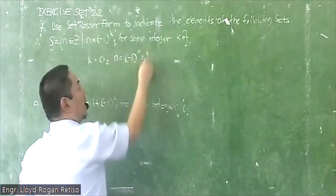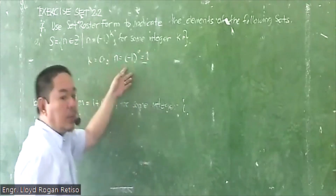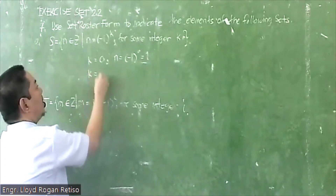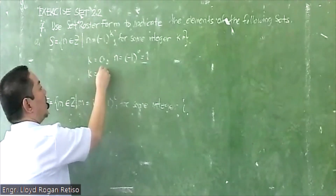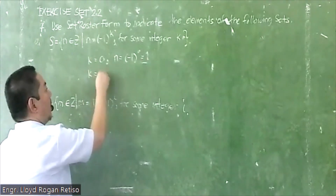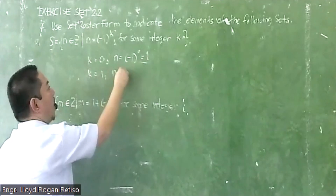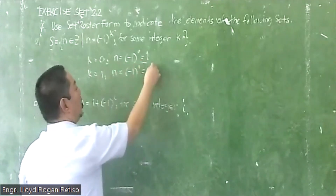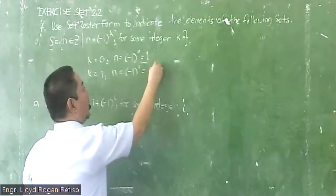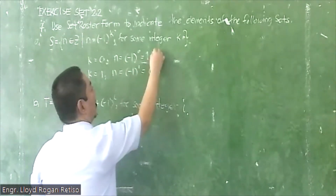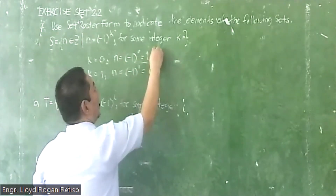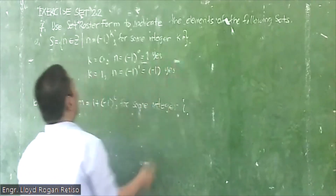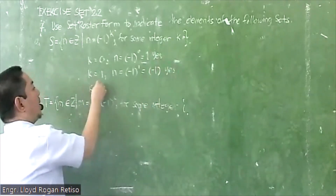If k equals zero, then n equals (-1)^0, which is 1. A number raised to zero is 1. Okay. So let k equal positive 1, then n equals (-1)^1, which is negative 1. So this is also an integer — yes.